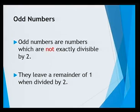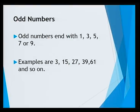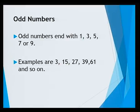We now move on to odd numbers. Odd numbers are numbers which are not exactly divisible by 2. That is, they leave a remainder of 1 when divided by 2. Usually, odd numbers end with either 1, 3, 5, 7, or 9. Some examples of odd numbers are 3, 15, 27, 39, 61, and so on.